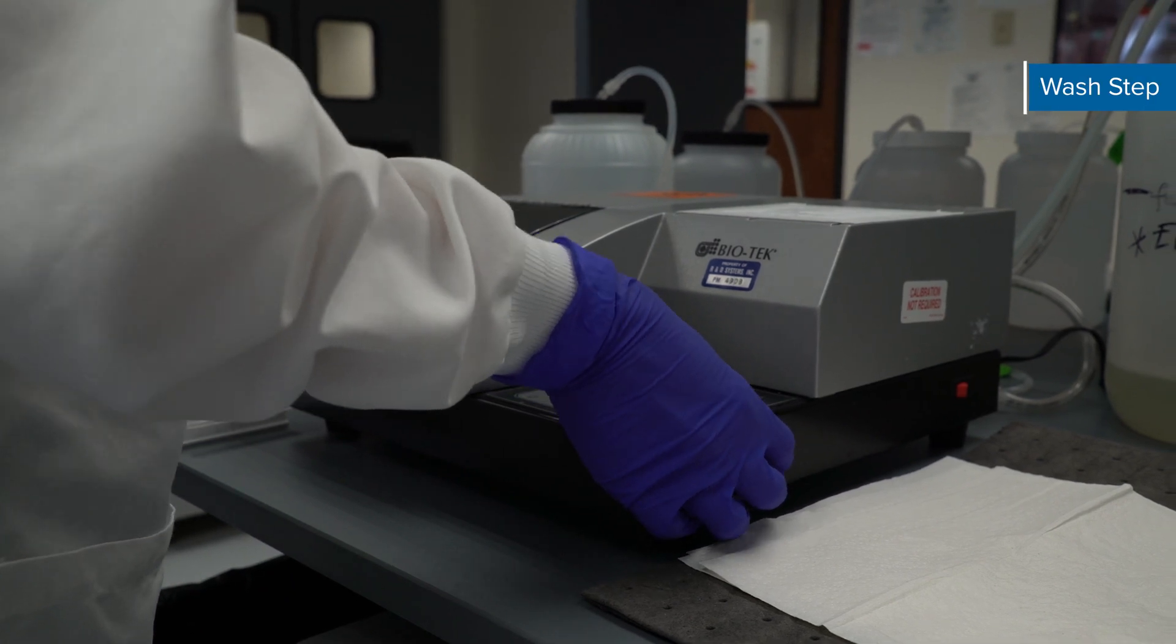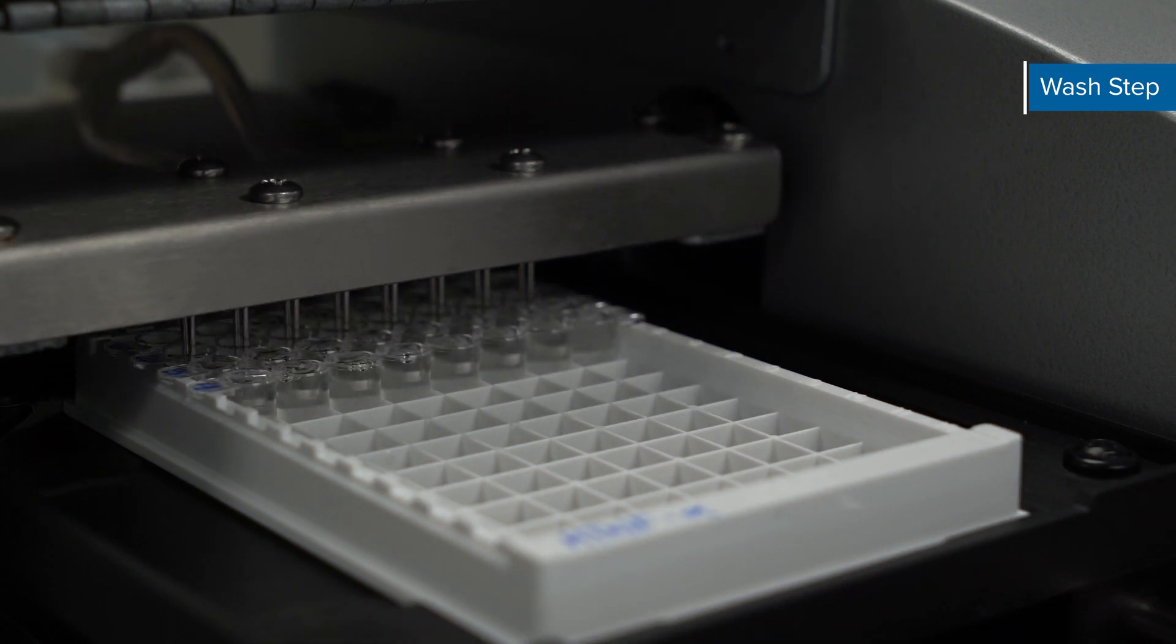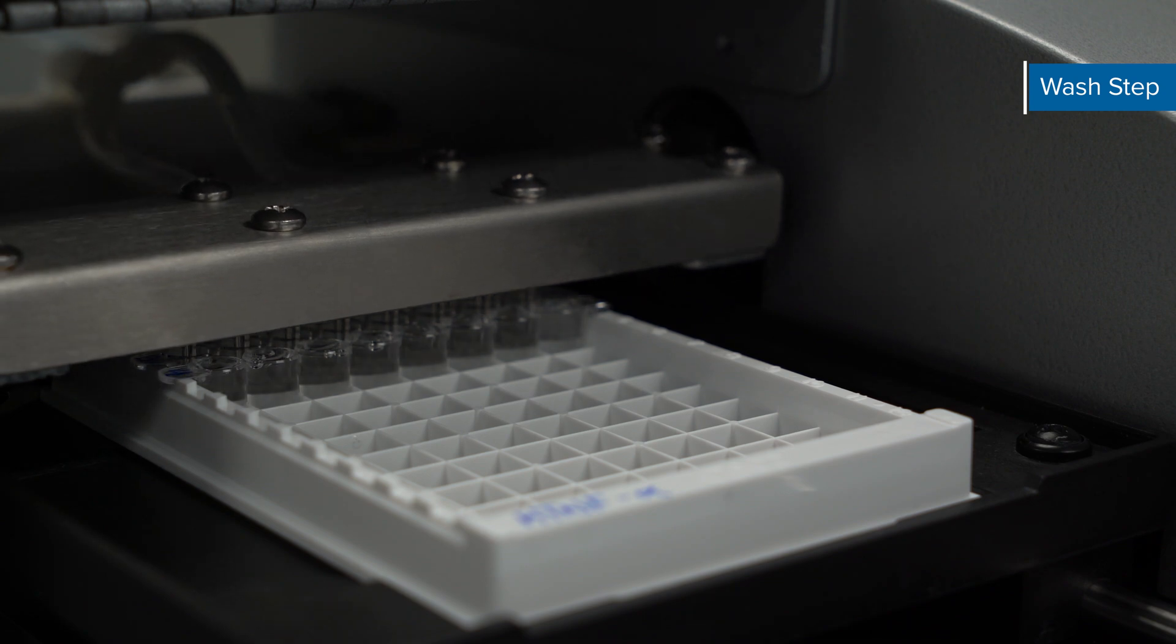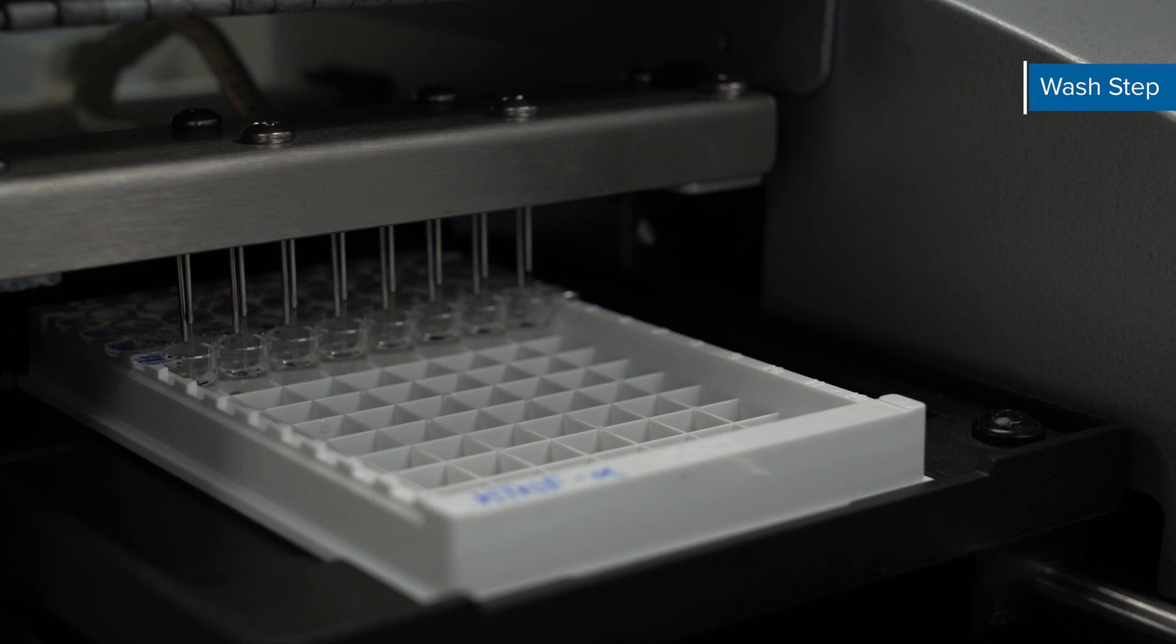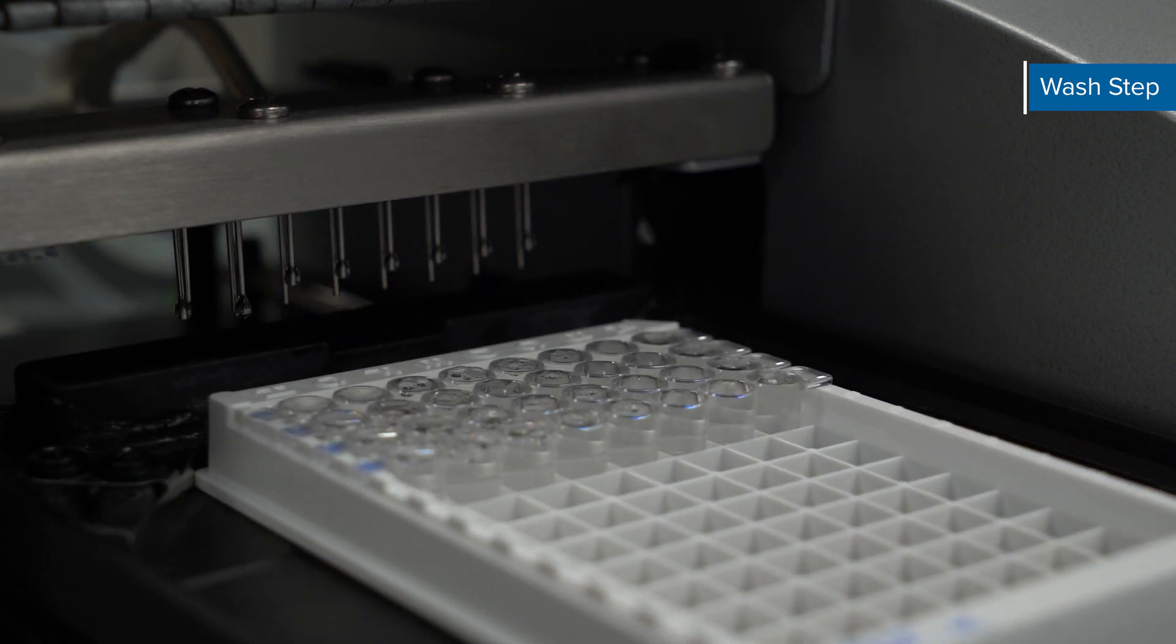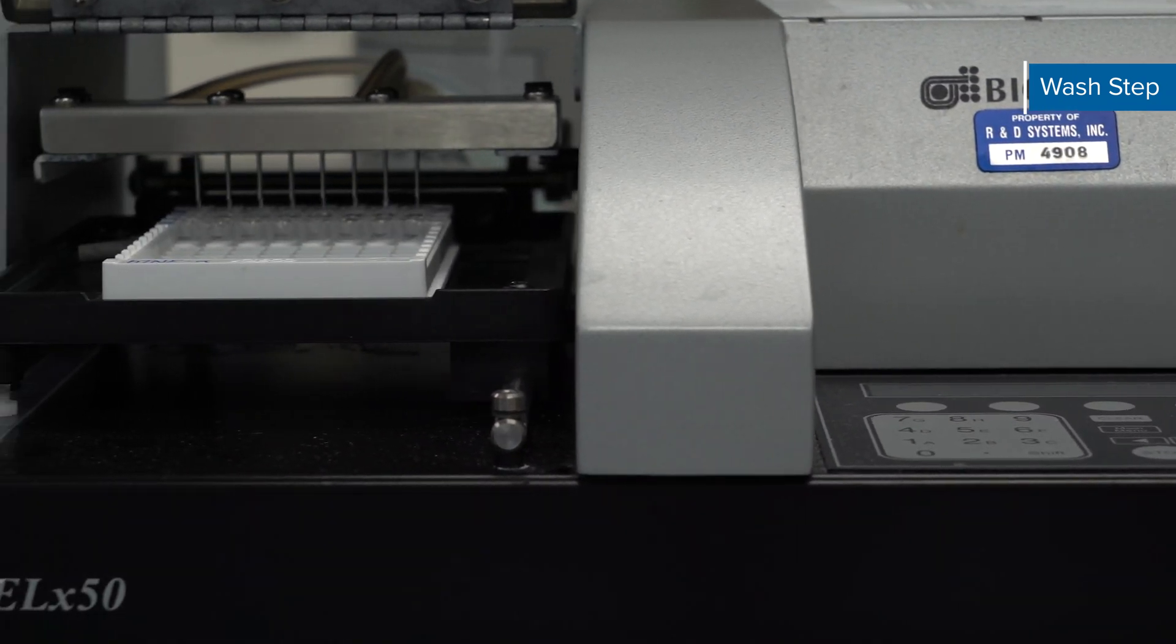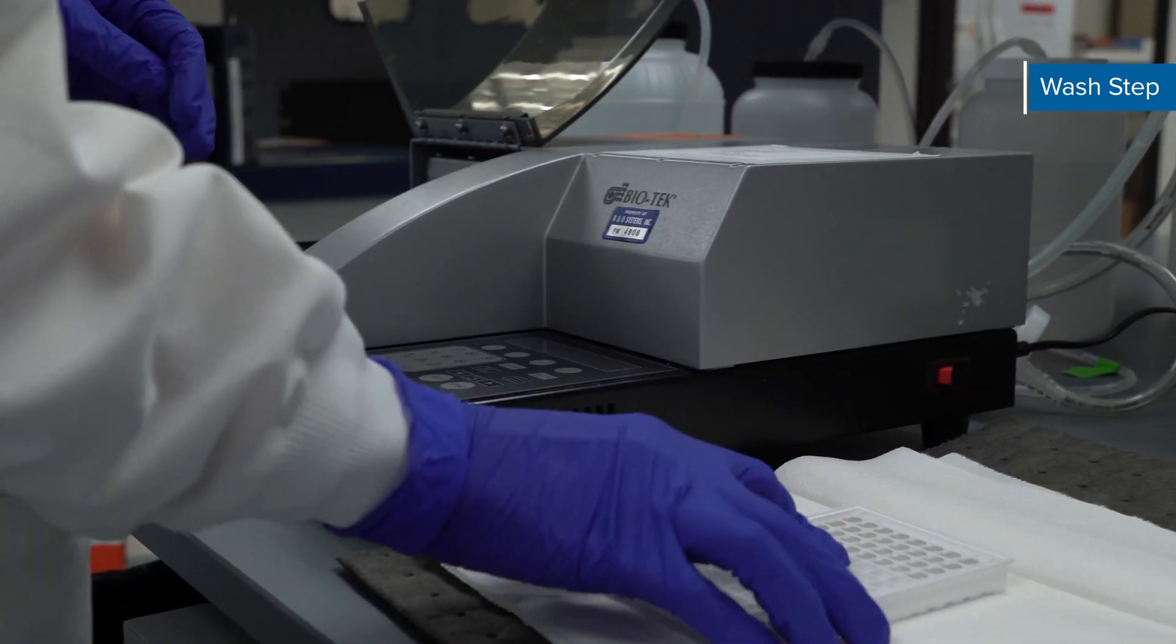Next, aspirate each well and wash by filling each well with 400 µL of wash buffer using a squirt bottle, manifold dispenser, or auto washer. Complete removal of liquid at each step is essential for good performance. Washing with a multi-channel pipette is too gentle and not recommended. We recommend adding a 30 second soak period after adding the wash buffer. Wash a total of three times and after the last wash, remove any remaining wash buffer by aspirating or decanting. Then invert the plate and blot it against clean paper towels.